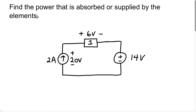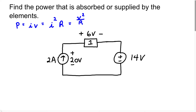In electrical engineering, we have different equations to find power. For DC analysis, the three main equations are: power equals current times voltage (IV); power equals current squared times resistance (I²R); or power equals voltage squared divided by resistance (V²/R). These are the three formulas we're going to use in DC analysis to calculate the power.